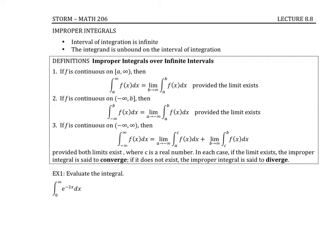In section 8.8, the last section of chapter 8, we're going to look at another type of integral. There are two cases: the first case is where our limits of integration are either negative infinity or positive infinity, and the second case is where somewhere on the interval of integration our function is unbounded, meaning there's a vertical asymptote.